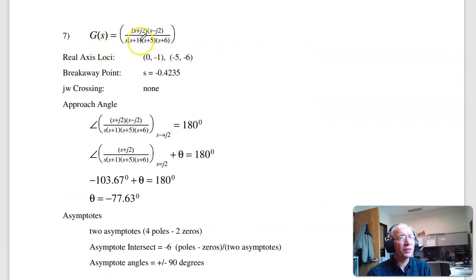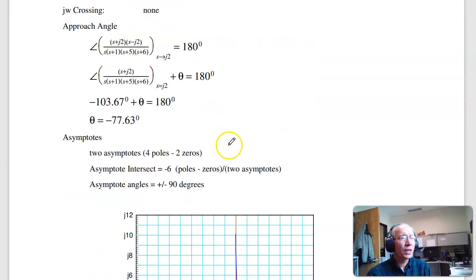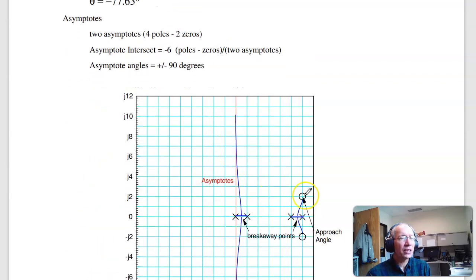Number 7. If I have zeros, same idea. As I approach the zero, angles have to add up to 180. So here I've got four poles, two zeros. These two poles go to those zeros. These two go to the asymptote.